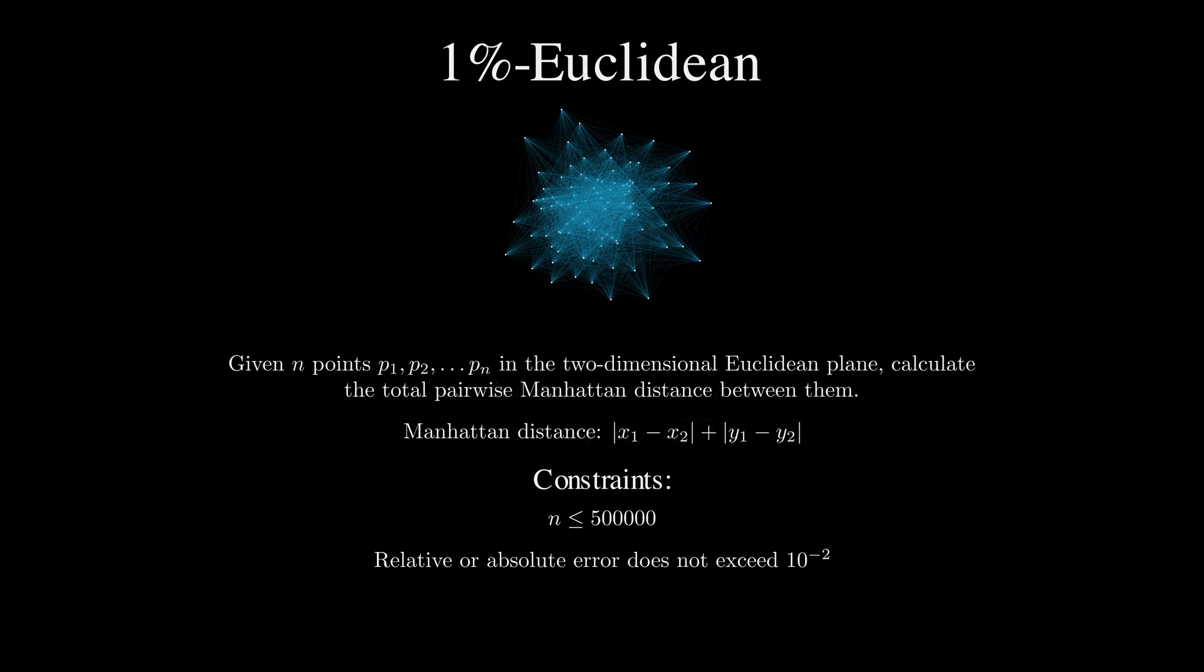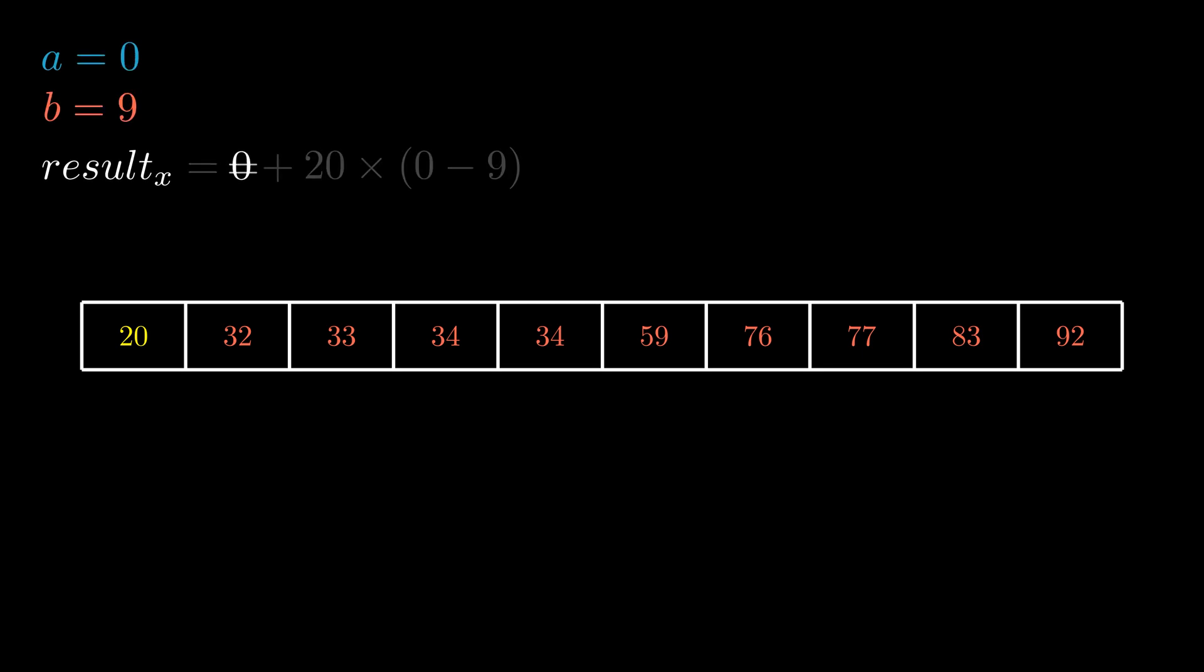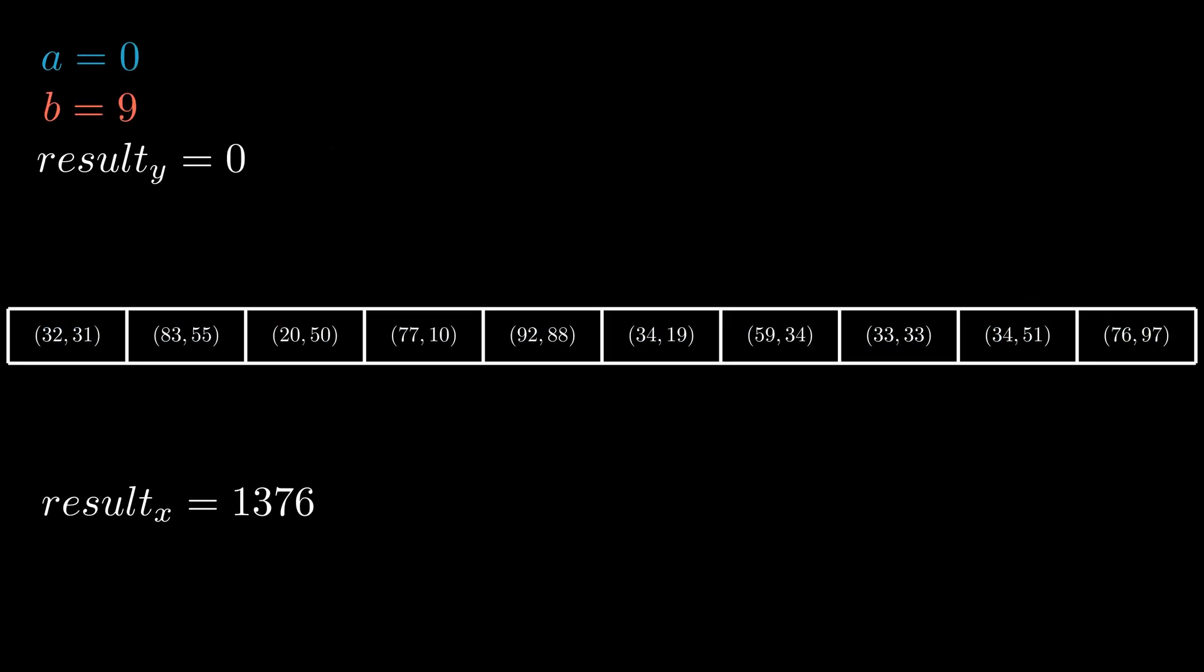So how to find overall Manhattan distance between points faster than n squared? Actually, it's quite easy. Note that we can search for the total distance separately by x-coordinate and by y. Let's try to calculate the total distance along the x-axis. To do this, note that x from the point (x,y) will be included in the final distance a times with a plus sign and b times with a minus sign, where a is the number of points with coordinate less than x and b is the number of points with coordinate greater than x. Then the solution is incredibly simple. It's enough to sort all the points by the x-coordinate, which can be done in O(n log n), go from left to right and add the next x to the final sum with a coefficient that is easy to calculate. Similarly, we can calculate the answer for y and the total distance.